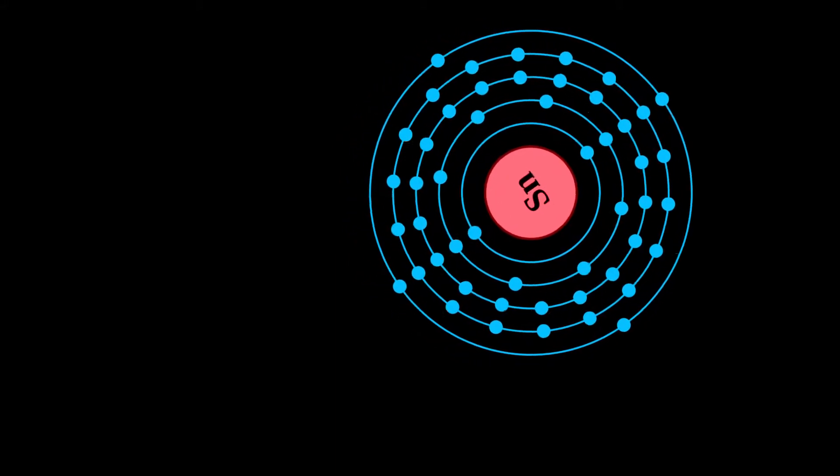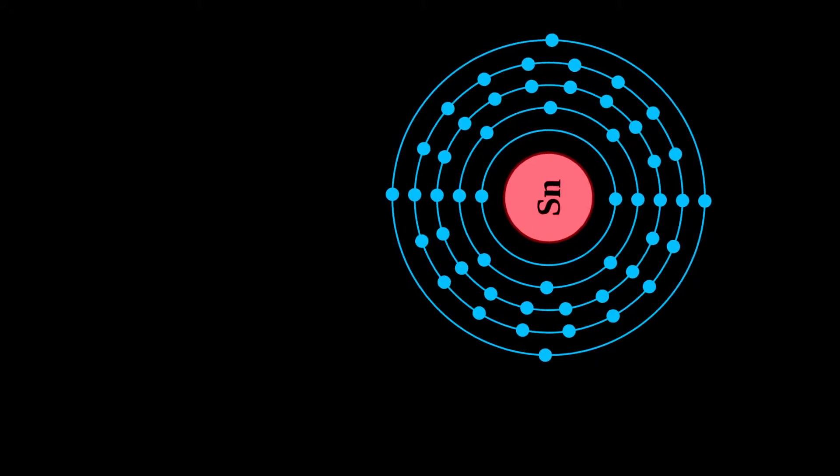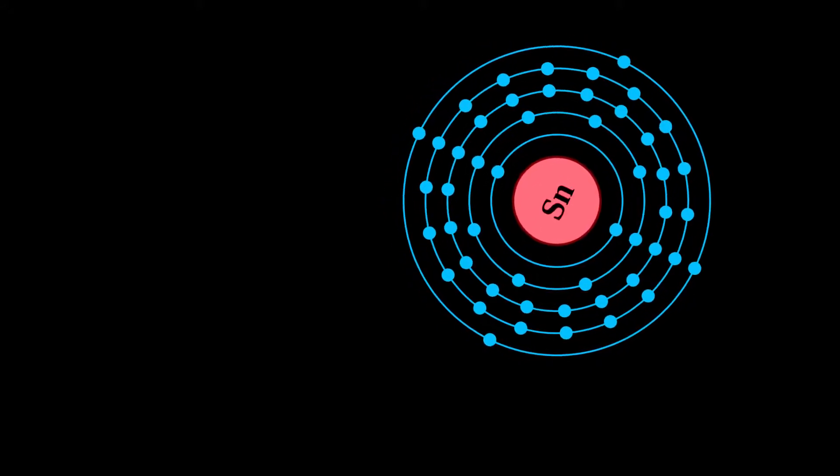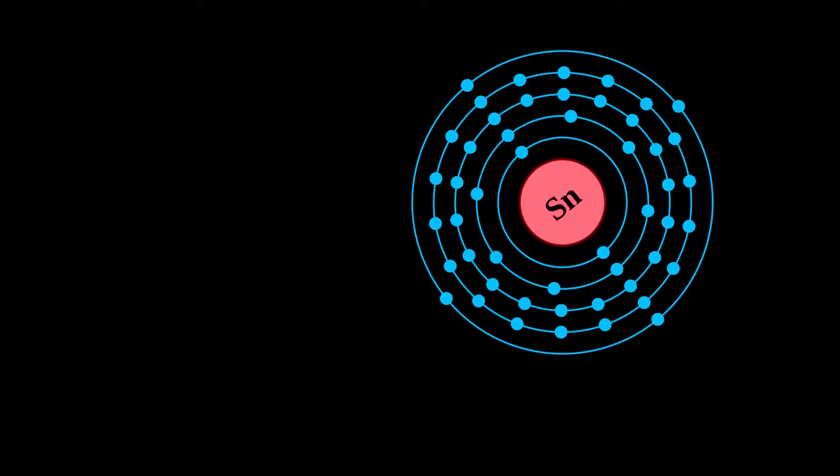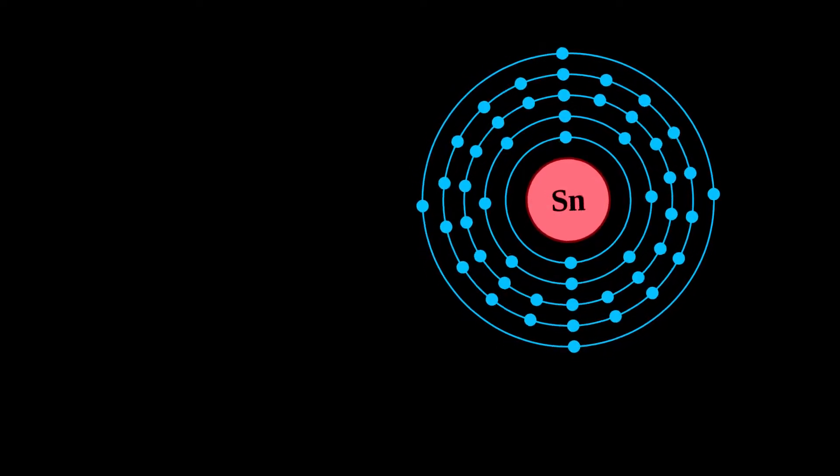Tin shows a chemical similarity to both of its neighbors in group 14, germanium and lead, and has two main oxidation states, plus two and the slightly more stable plus four.